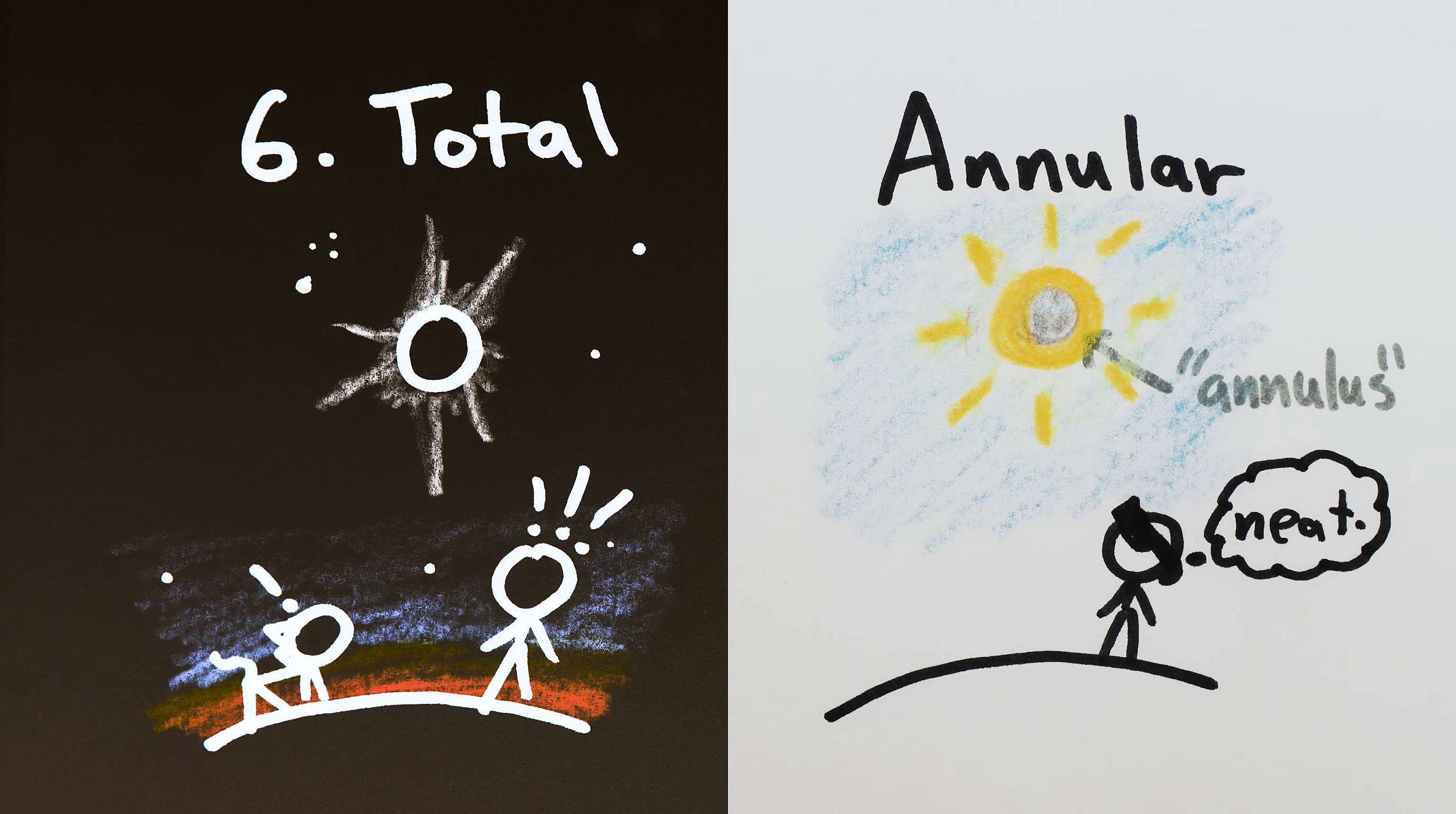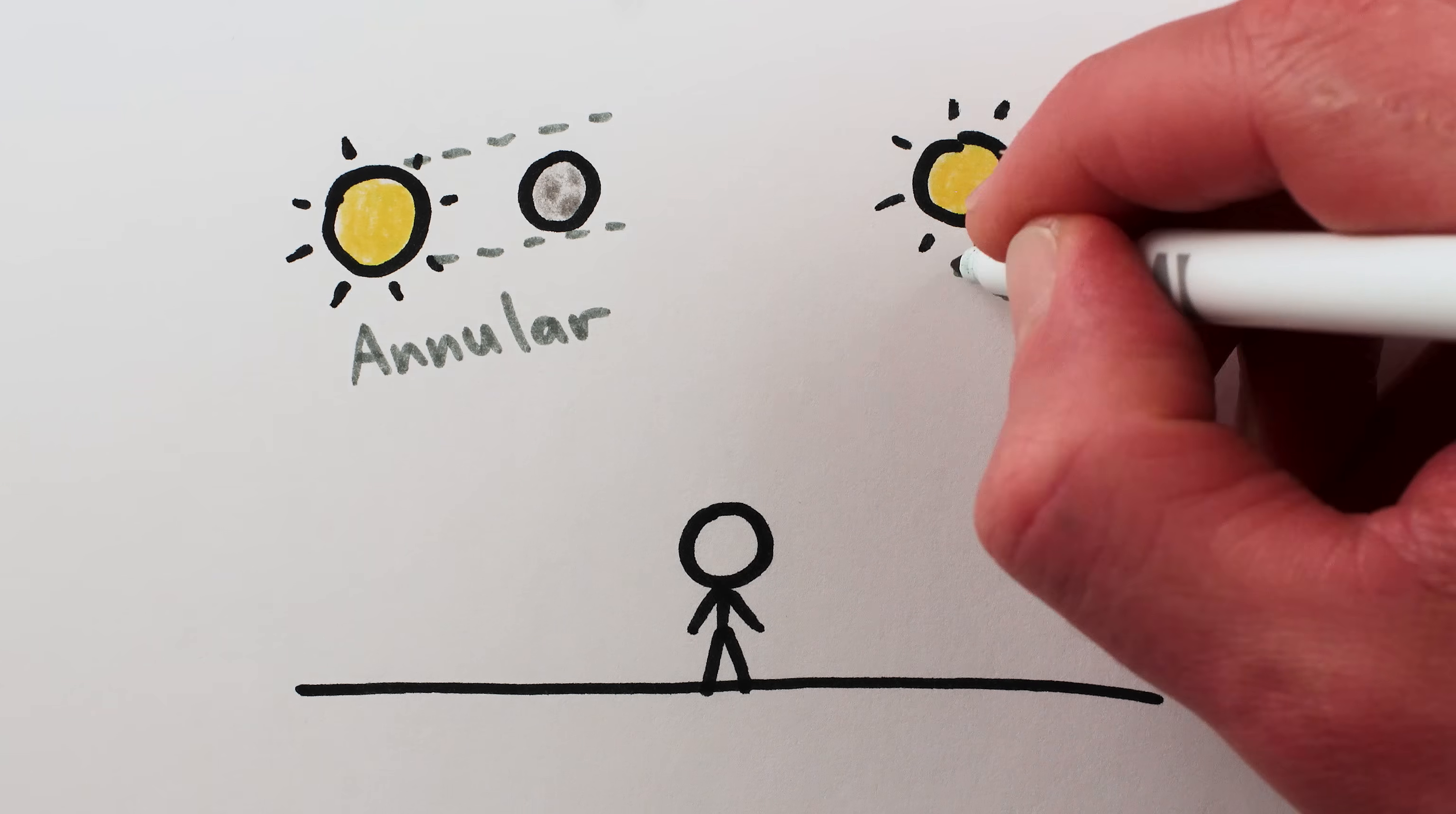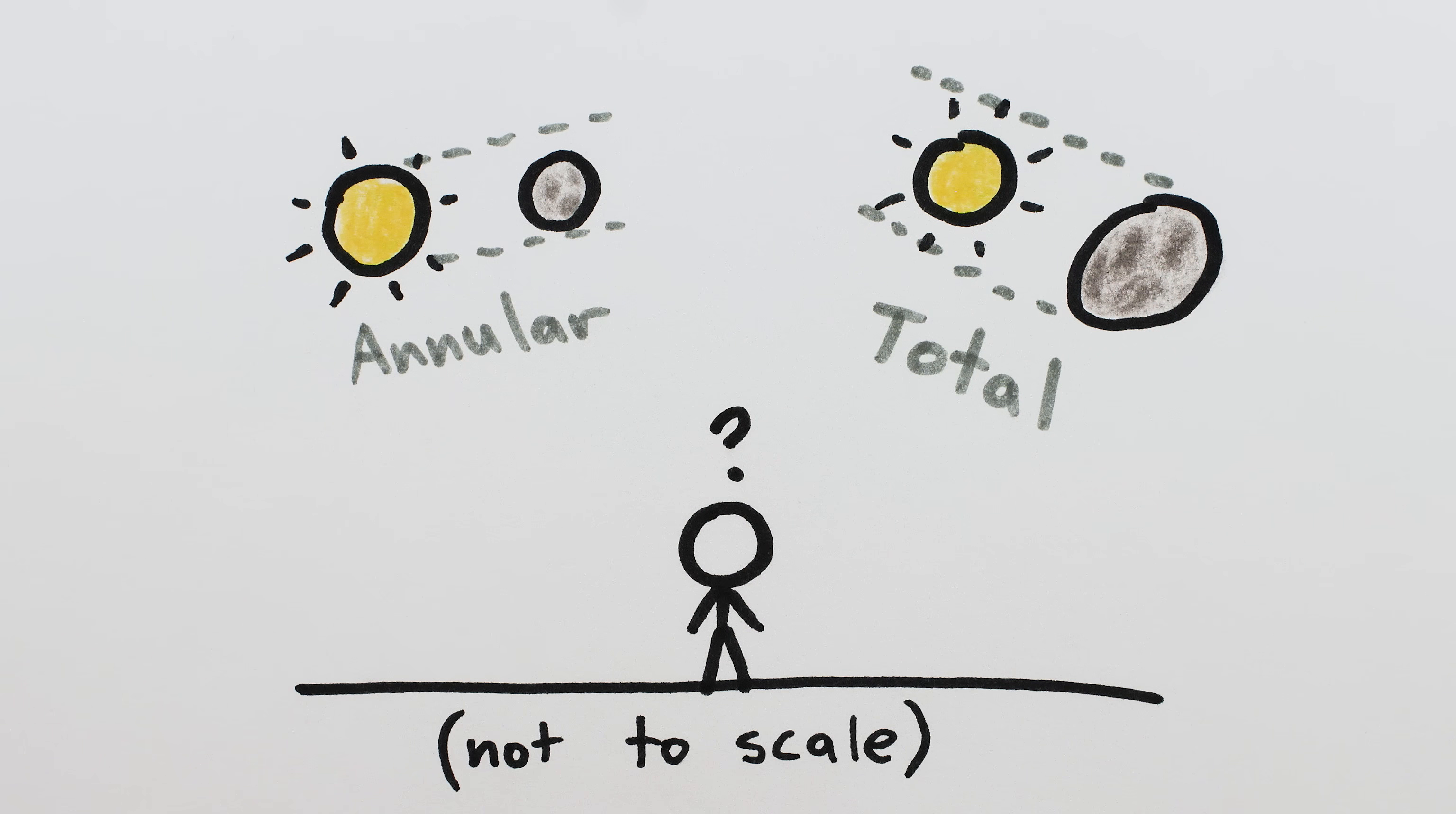They're cool, but are nothing like a total eclipse. It's kind of weird that we have both annular eclipses, where the moon appears smaller than the sun, and total eclipses, where the moon appears bigger than the sun.